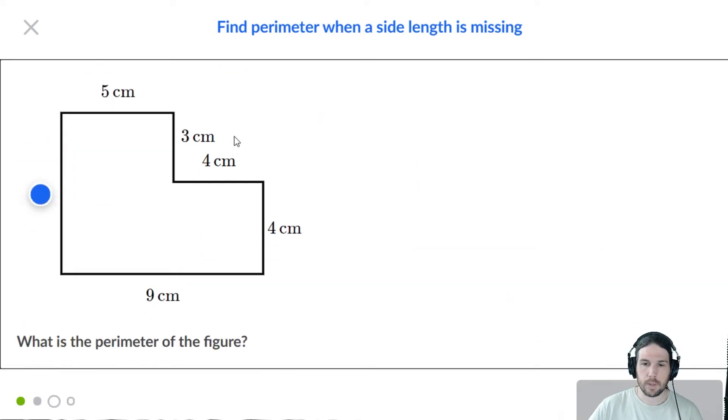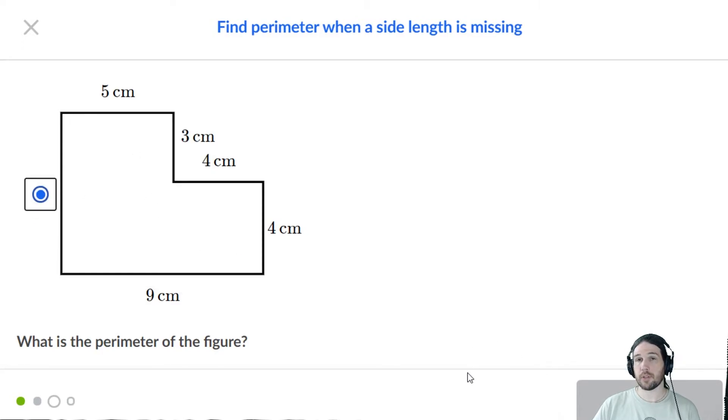Label the missing length. So again, we've got two short lengths, a three and a four. And those will add up to the big length, which is seven. And notice it works the same way up and down as well, right?